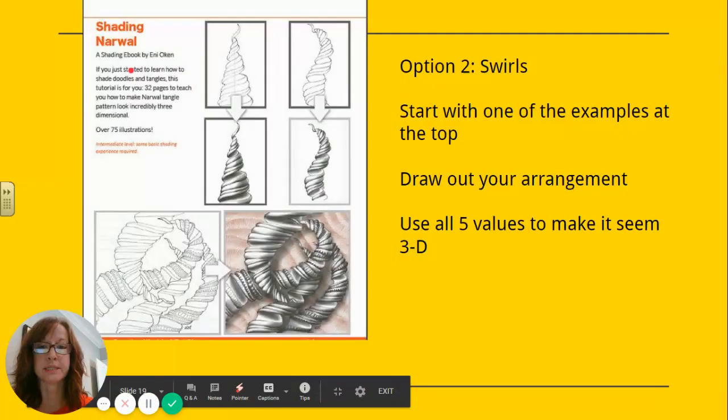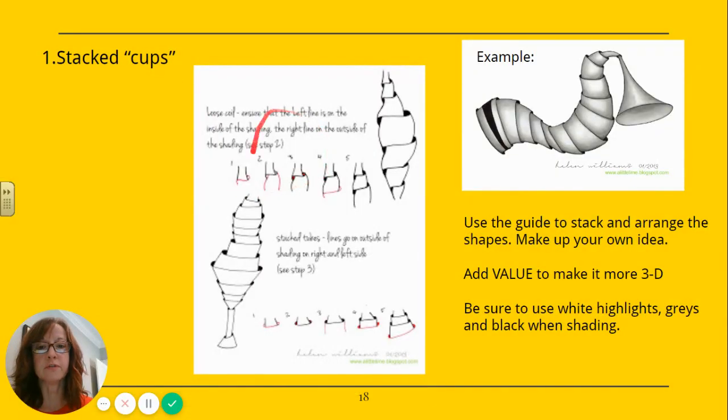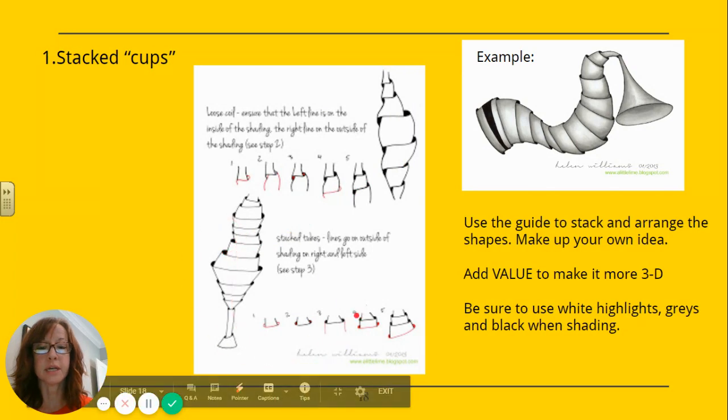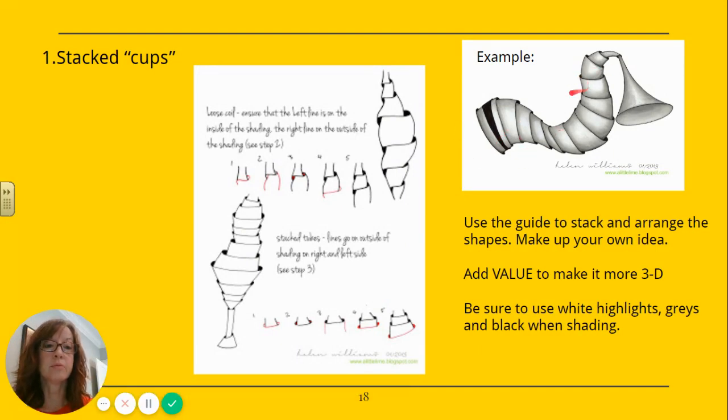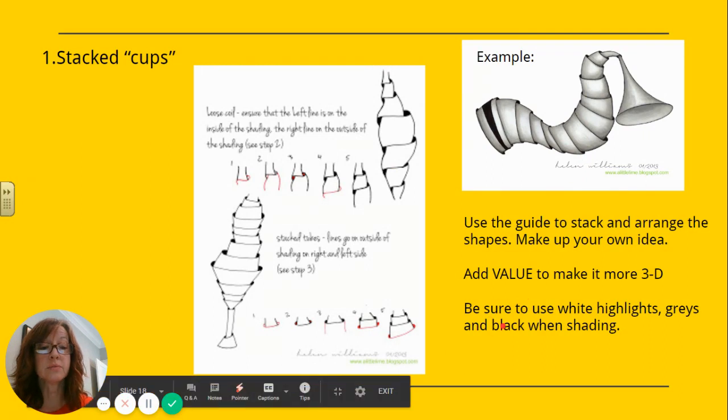So option one are stacked cups, basically. And for that, you're just following these examples. So here's one way of interpreting it. Here's another. I think this one is a little bit easier to follow. This one, they kind of twist. So if you decide to do this option, check this out at the bottom, it just kind of goes step by step. Create some sort of image with these stacked cups, whatever you would like. I included one example. It kind of reminds me of an elephant trunk. Whatever you want to do with the stacked cups, after you have it drawn out, you're going to add value to make it seem more 3D. So really dark where those little gaps are shaded. And then the highlights, kind of like we did the other day with those strips. So be sure you include white highlights, different grays, and then black for your shading. It'll make it more believable.